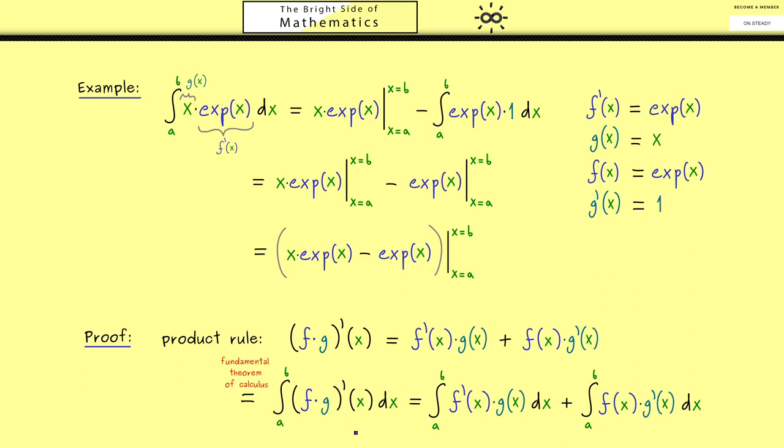The only question is what is the left-hand side? It should not surprise you when you see the derivative that we can use the fundamental theorem of calculus. It gives us that the integral is given by an antiderivative. An antiderivative of this function is simply given by f times g. That's the whole proof. We just have to bring this integral to the other side. Hence, the integration by parts formula is proven.